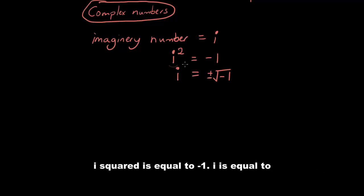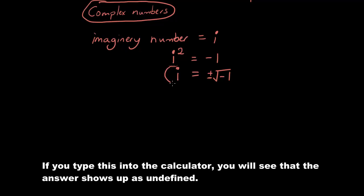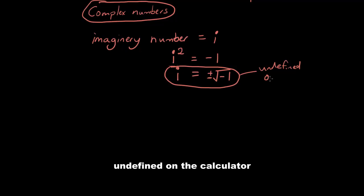So i squared is equal to negative 1, i is equal to plus minus square root of negative 1. And if you type this into the calculator, you will see that the calculator shows up as undefined.